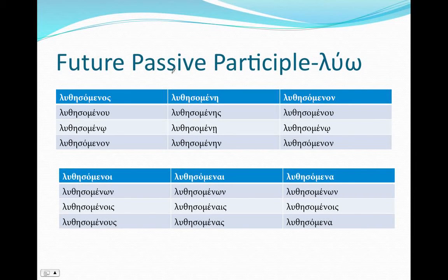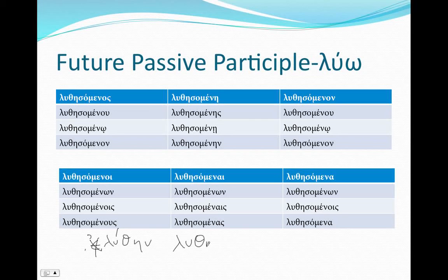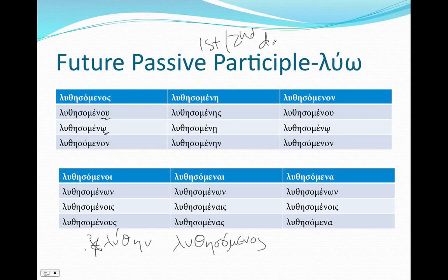Now let's take a look at the future passive. This is a little more complicated because you have to form the future passive stem from the sixth principal part. For lu-ō, that sixth part was elu-thēn. To form the future passive stem, we drop off the epsilon, keep the eta, and add a sigma — giving us lu-thēs as our stem. Then we form the participle just as we did with the middle: omicron, men, and ending. So: lu-thēsomenos, lu-thēsomenē, lu-thēsomenon, and so on, using first and second declension endings.